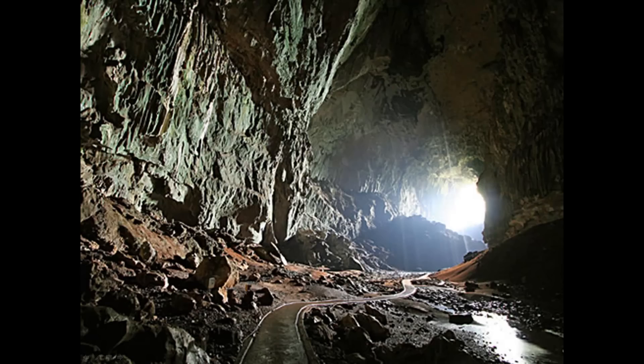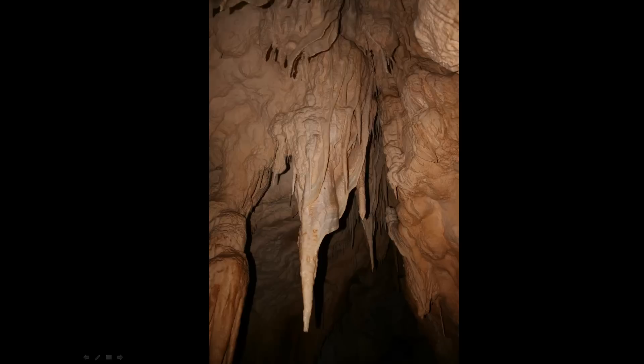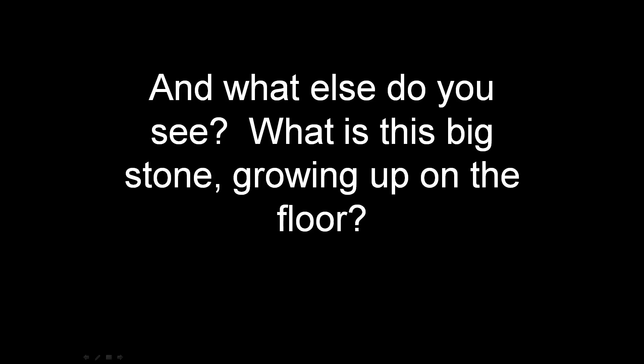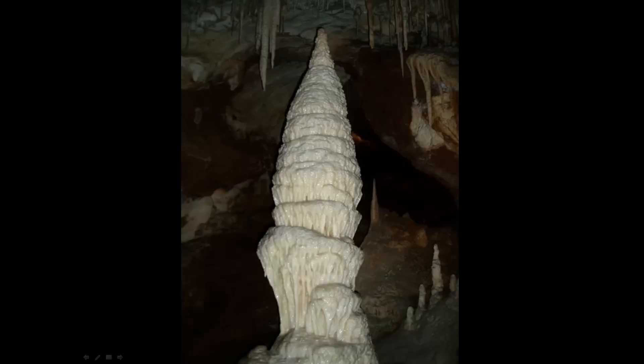What is further down in the cave? What will you see there? You can see a pointy stone hanging from the ceiling. That's called a stalactite. And what else do you see? What is this big stone growing up on the floor? It's called a stalagmite. It might even be white. Sometimes the stalactites and stalagmites come together. They make columns.